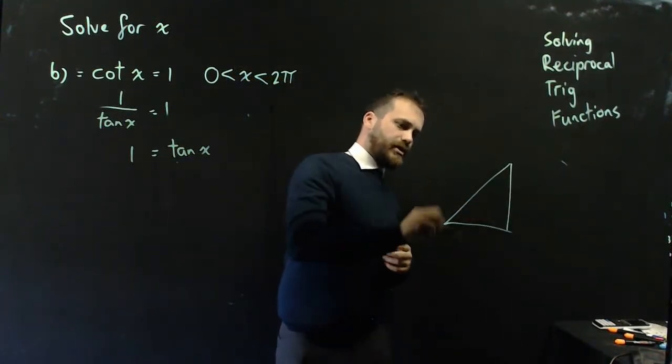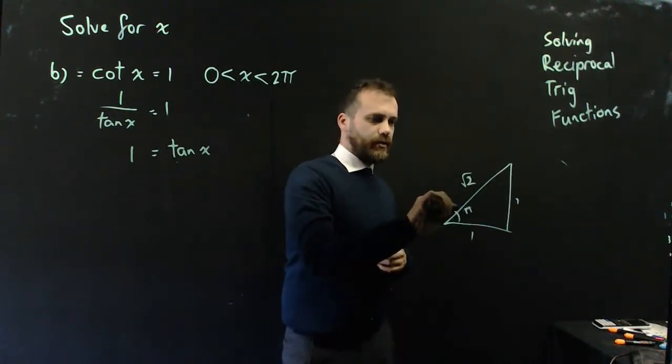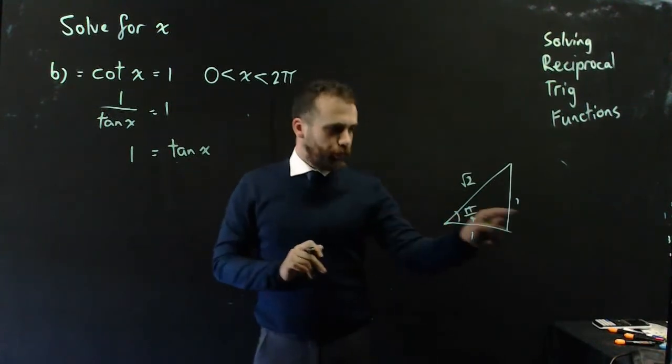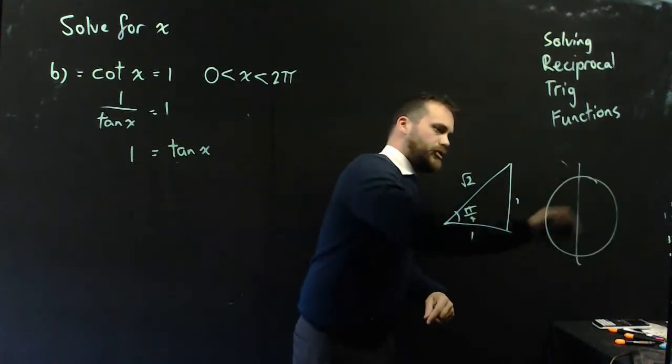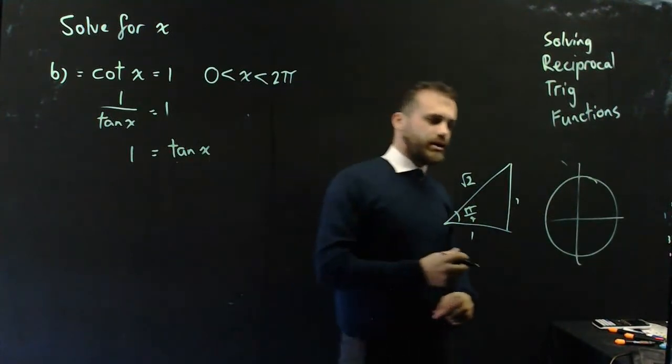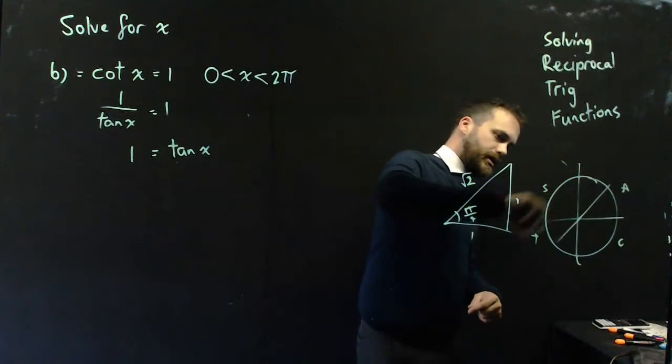Using one of our standard triangles, 1, 1, root 2, we can say that opposite over adjacent is pi on 4. And using our unit circle and seeing that the 1 is positive, it's going to be C, A, S, T here and here.